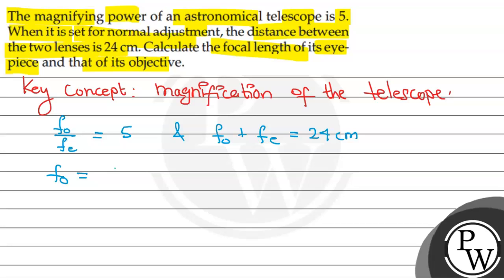f_o is equal to 5 times f_e. So 6 times f_e is equal to 24 cm.